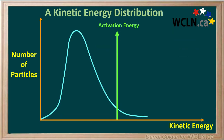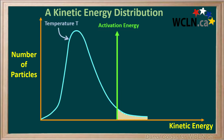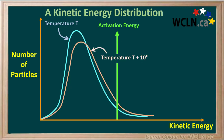Chemists have determined a rule of thumb when the activation energy is near the right-hand side of the curve. The area under the curve to the right of the activation energy represents the fraction of particles that will have successful collisions. We'll state that this curve occurs for a sample at temperature T. When we increase the temperature by 10 degrees Celsius, the curve moves to the right and spreads out a bit. The area under the curve to the right of the activation energy is about double the area for temperature T.